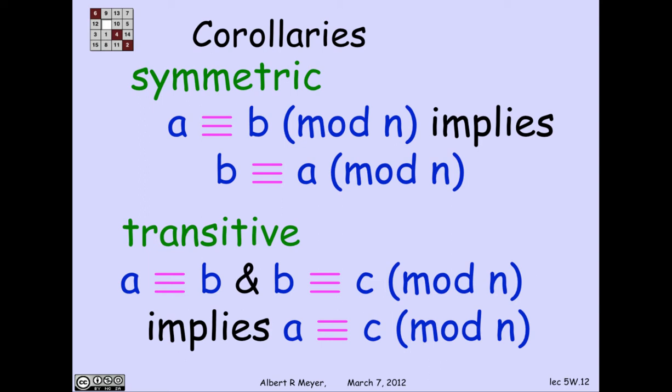But we can read it as saying the first says that a and b have the same remainder. The second says that b and c have the same remainder. So obviously, a and c have the same remainder. And we've proved this property that's known as transitivity of congruence.